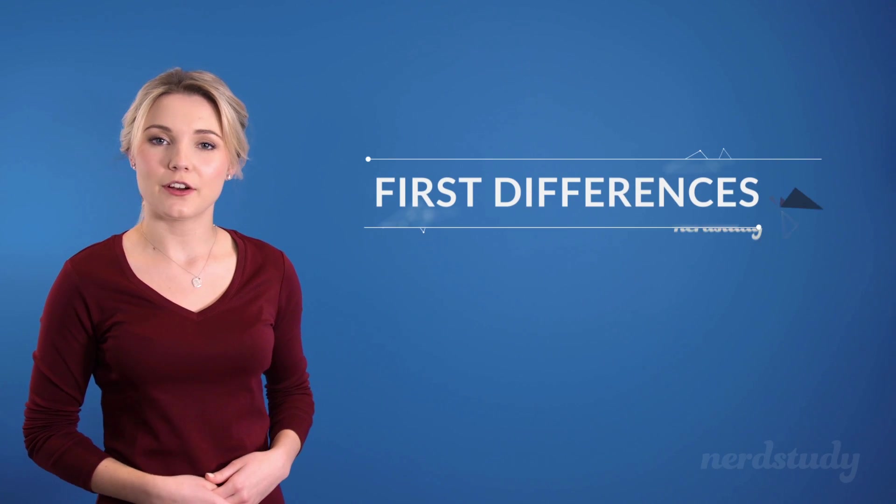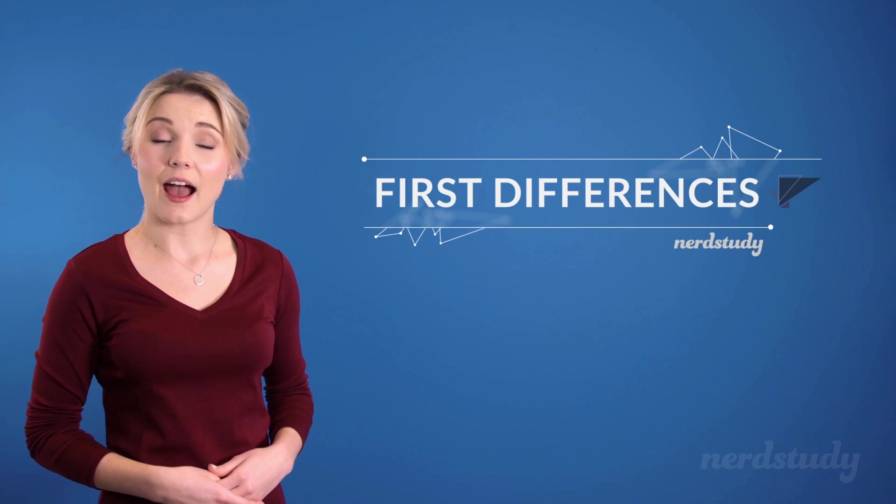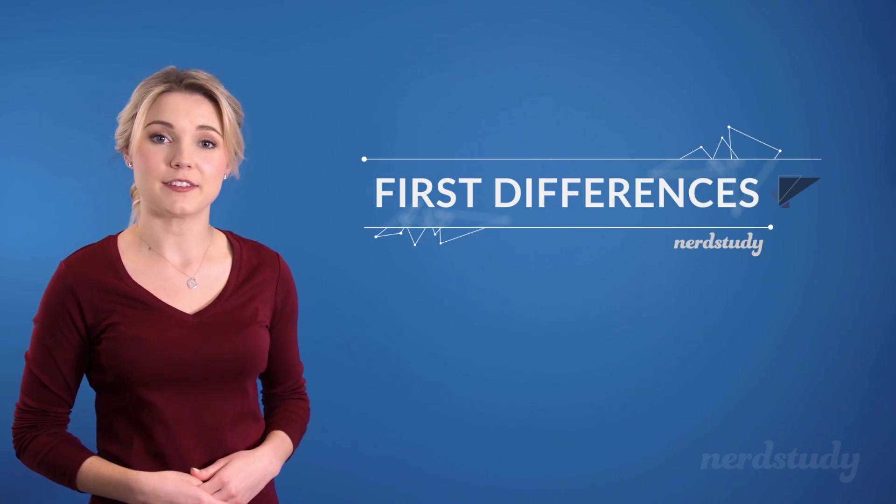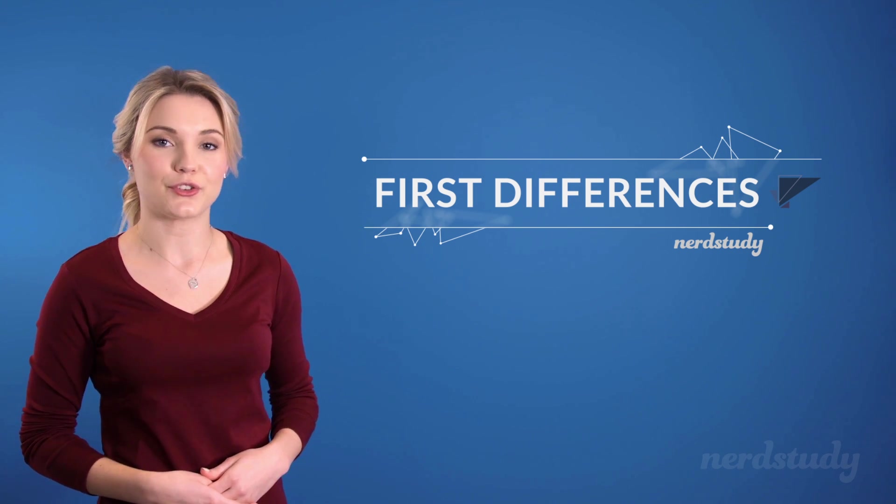In this video, we're going to learn about first differences and how we can use them to find out if a set of coordinates plot out a straight line on a graph.